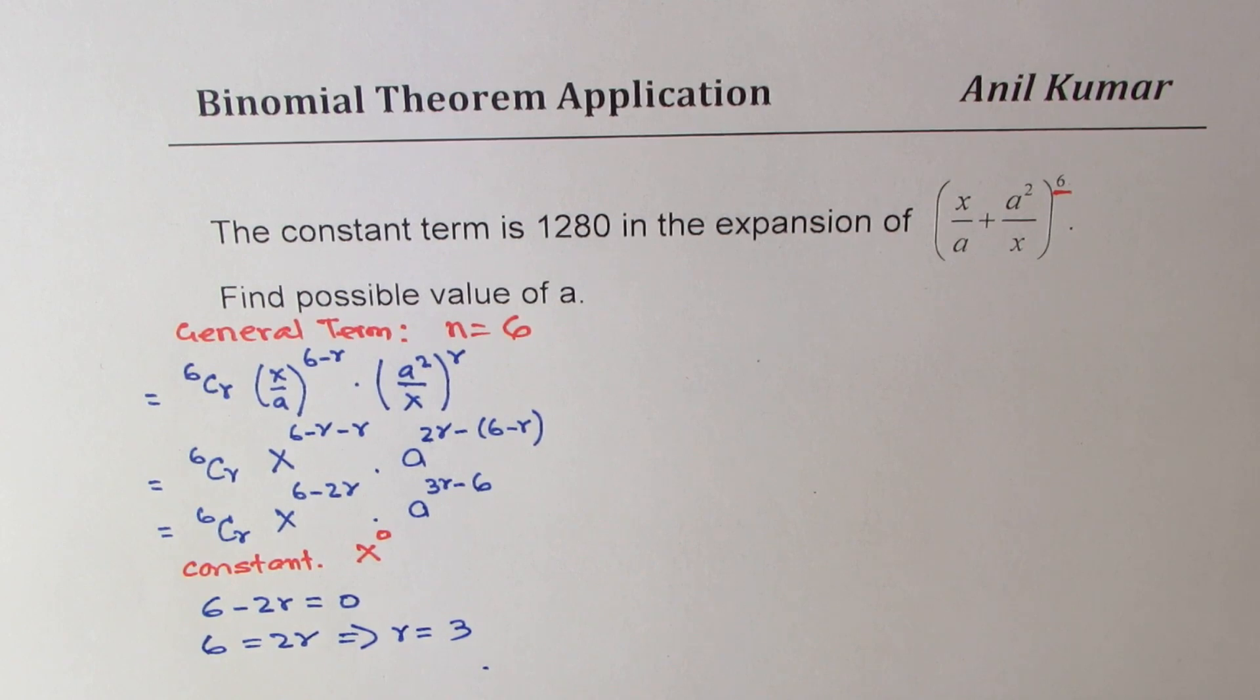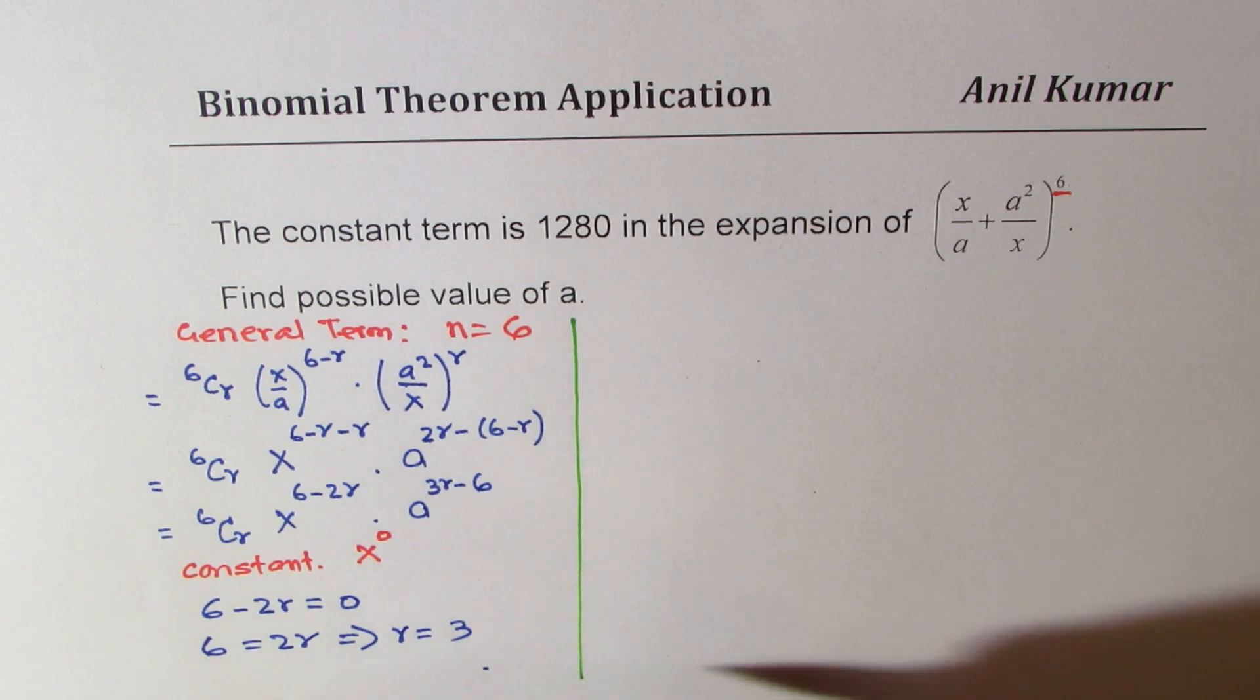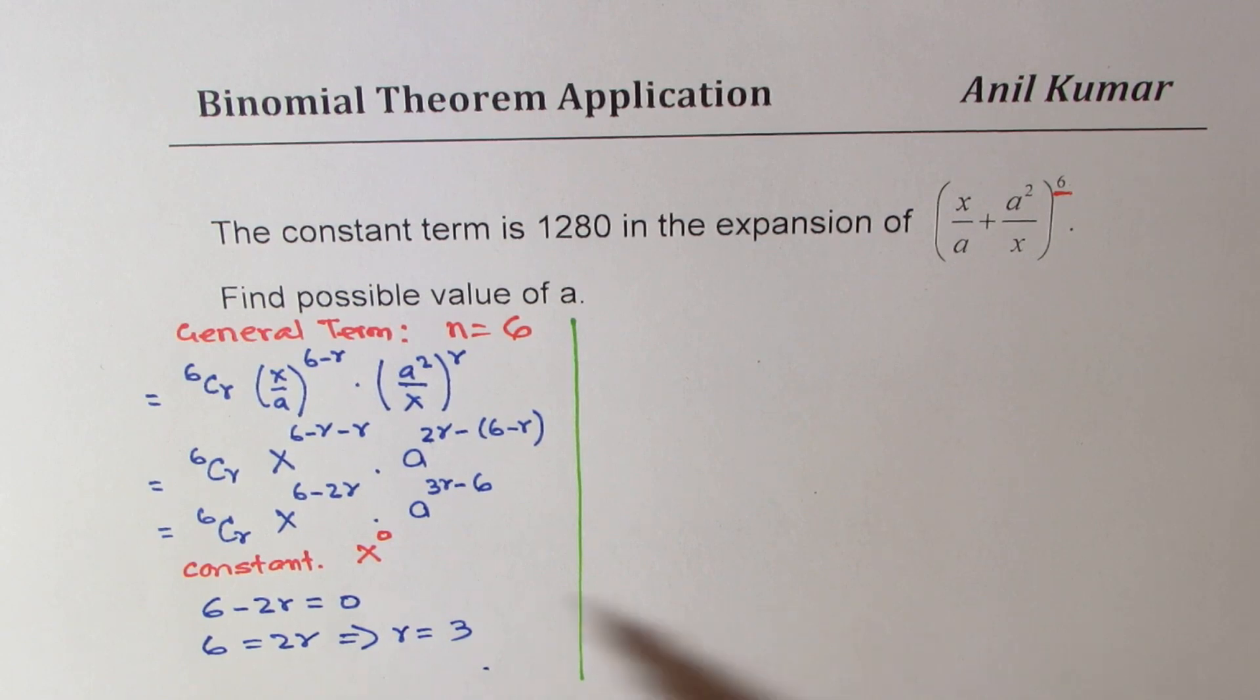So what we get here is the value of r. So once we get the value of r, we can substitute this in the term which we have here, which is 6Cr x^(power of this) and get the value of a.